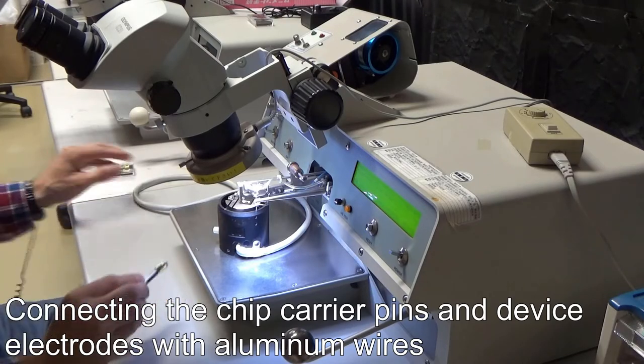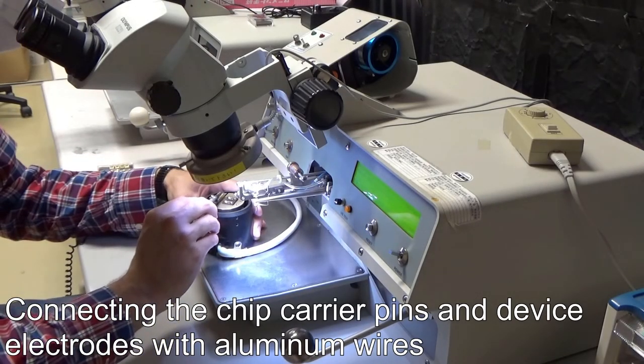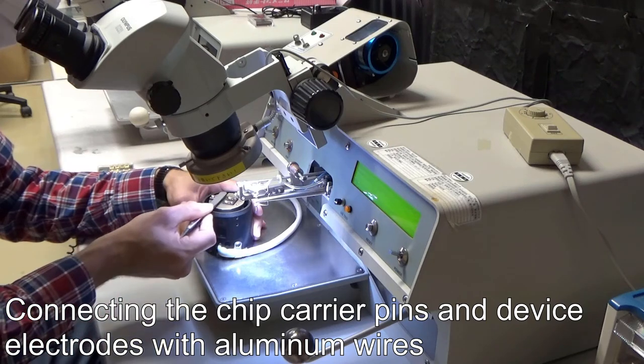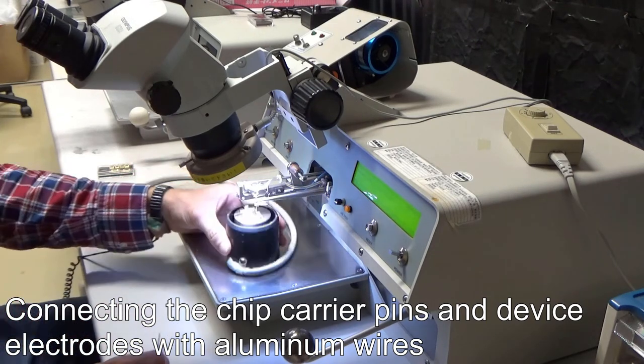We then use a wire bonding machine to connect each metal electrode and gate on the device to a separate pin of the chip carrier.